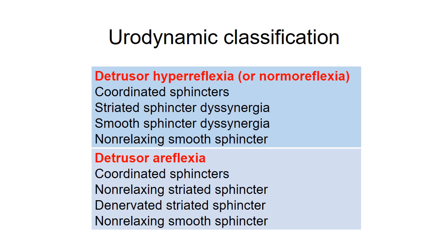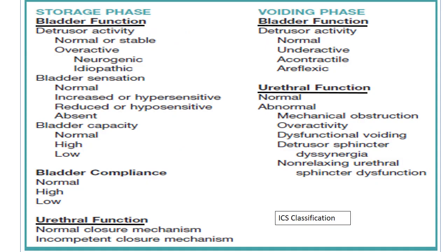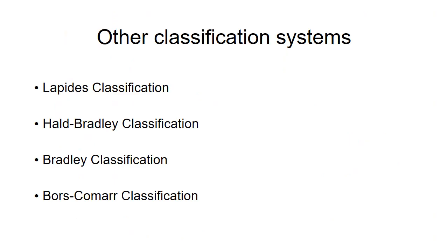There is also a urodynamic classification based on objective urodynamic data, proposed by the International Continence Society (ICS). This is an extension of the urodynamic classification system where the storage and voiding phases are explained separately, with bladder and urethral function described in each phase. Other classification systems also exist.